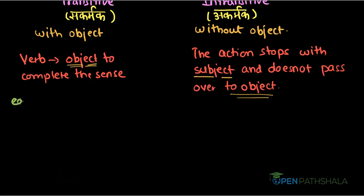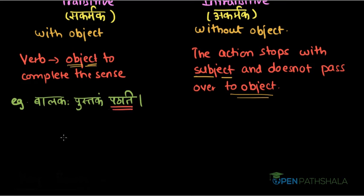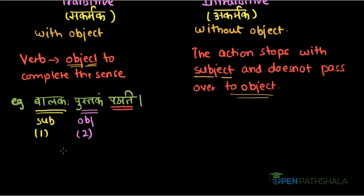Let us take an example. Balakah Pustakam Pathati. Let us ask two questions to the verb Pathati. First: who is reading? The answer is Balakah, so Balakah is our subject in nominative case. Second: what is the boy reading? The answer is Pustakam, so Pustakam is our object in accusative case. Since we get an answer to 'what,' this verb Pathati is a transitive verb.